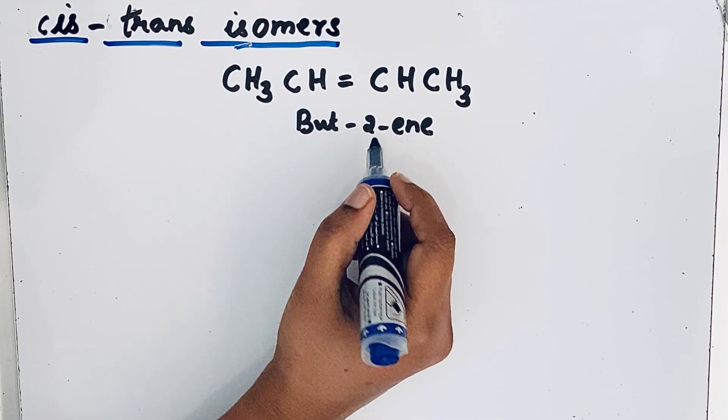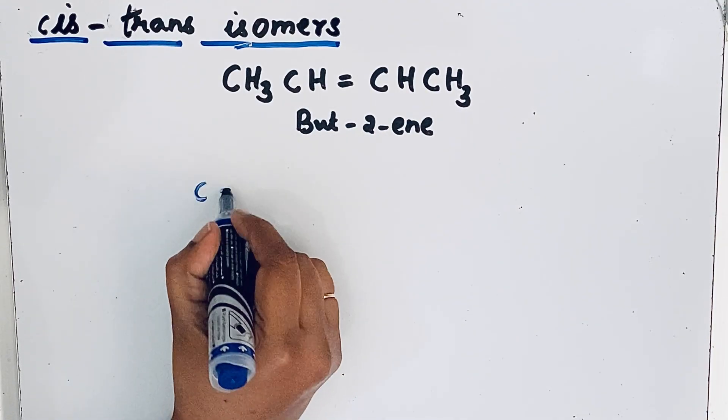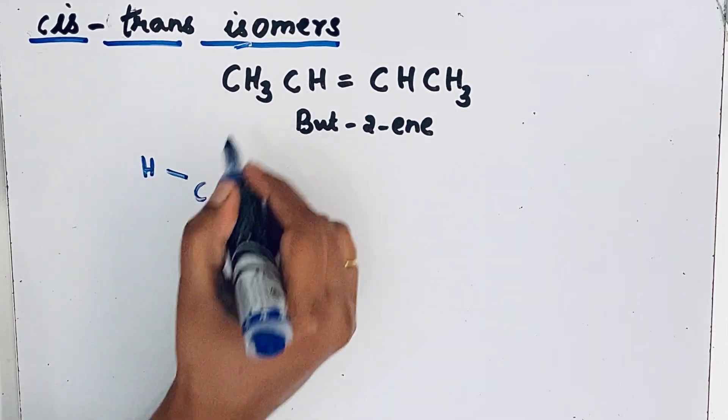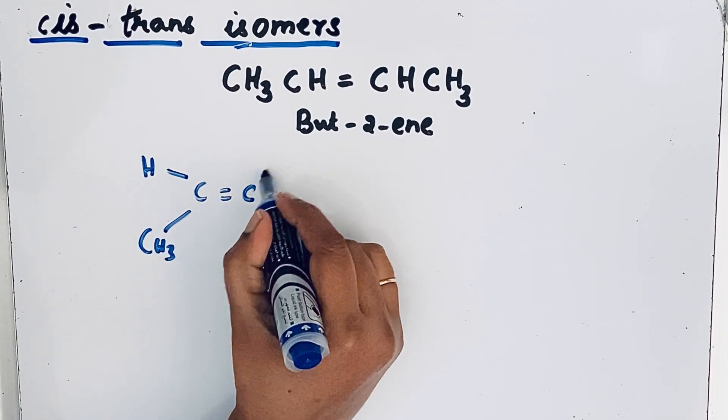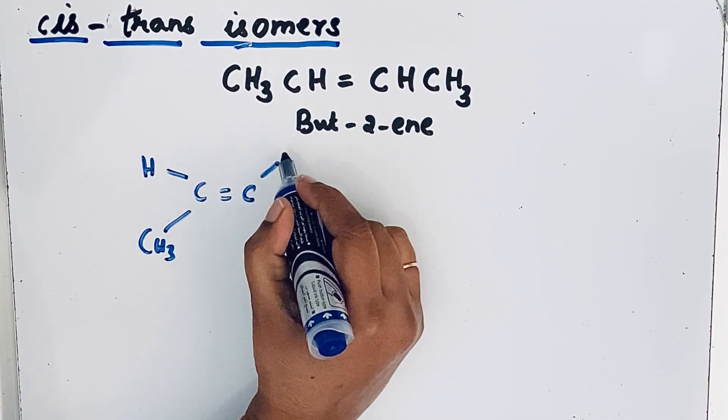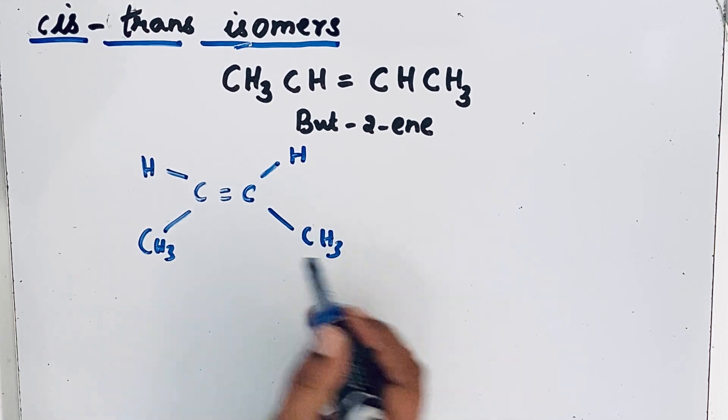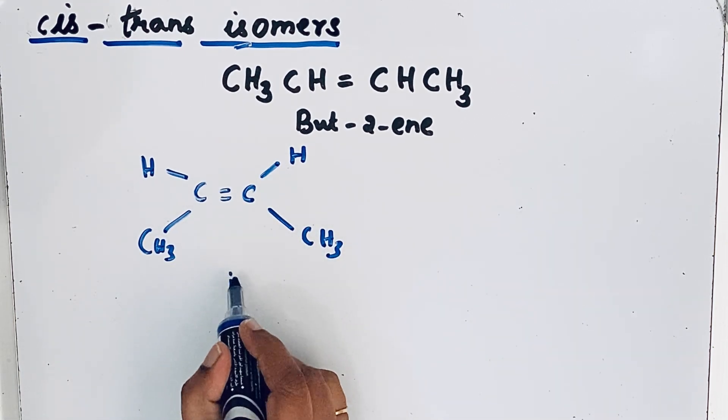Let us draw the structures of But-2-ene. C double bond C and then one hydrogen, one methyl group. Same way we can write for this carbon hydrogen and CH3. There is another possibility. This is structure one.